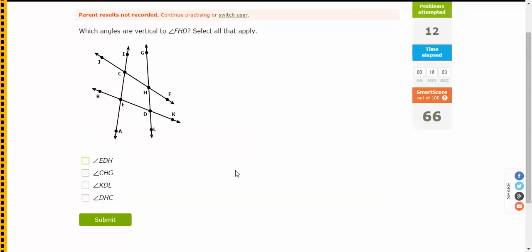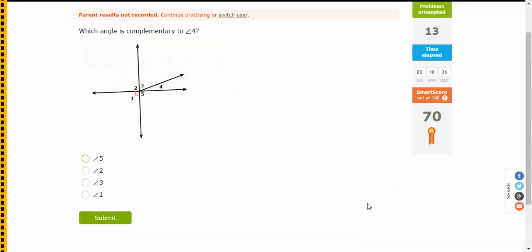I'm going to do two more. Which angles are vertical to FHD? Let's have a look at FHD. So it's this little angle in the middle here. I hope you can see my cursor. I'm not sure if you can. So it's FHD. Which angles are vertical to it? Well, GHC is. Now that isn't up there, so let's look for CHG. That is there. And let's see if there's any more. I just feel like that's the only one. Let's see. There you go.